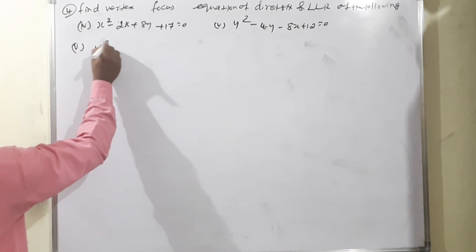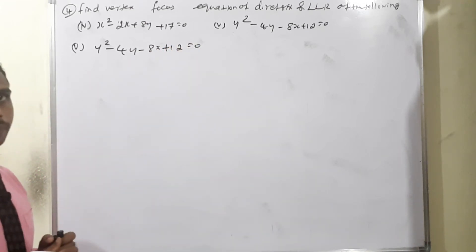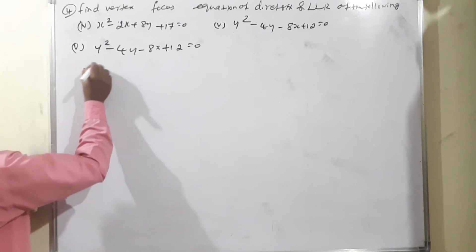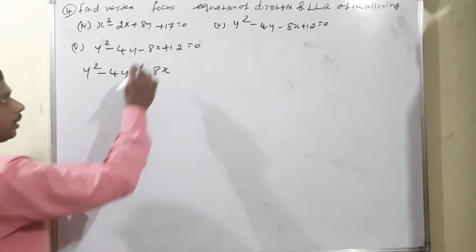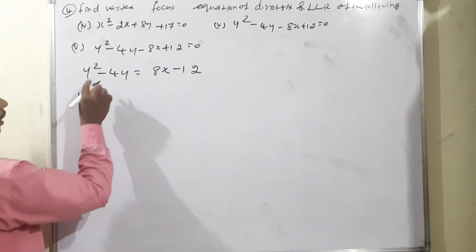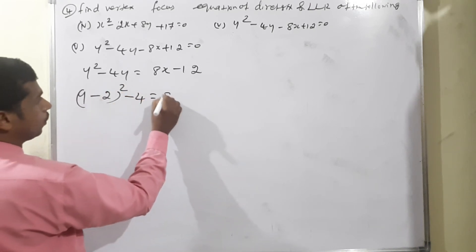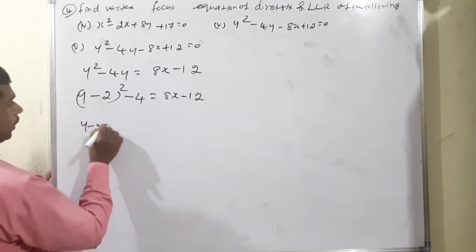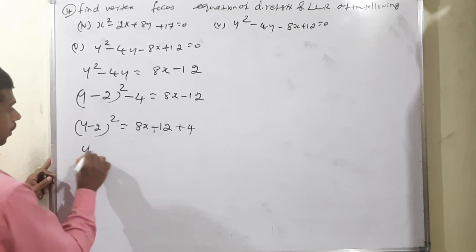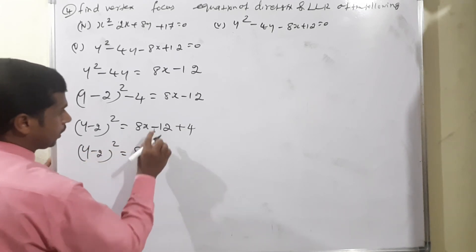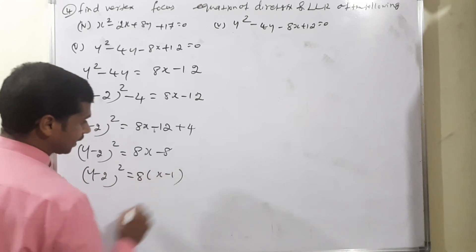Moving to subdivision five: y² - 4y - 8x + 12 = 0. Group y-family on the left: y² - 4y = 8x - 12. Completing the square: (y - 2)² - 4 = 8x - 12. Therefore (y - 2)² = 8x - 12 + 4 = 8x - 8 = 8(x - 1).